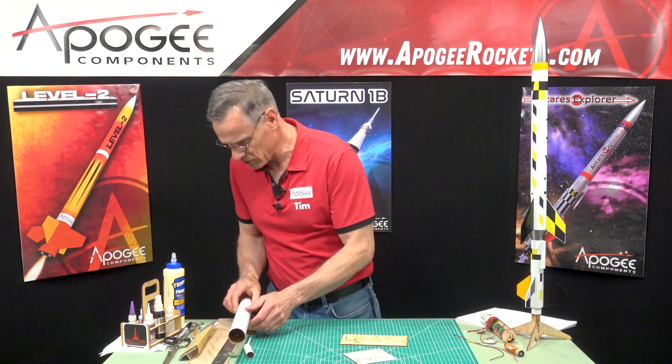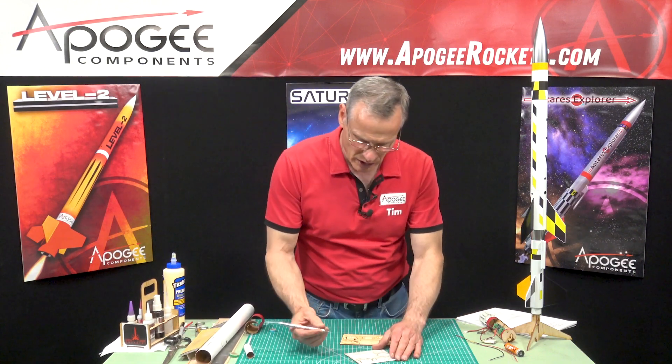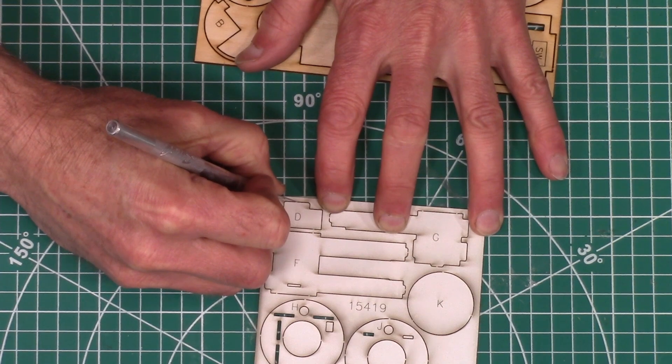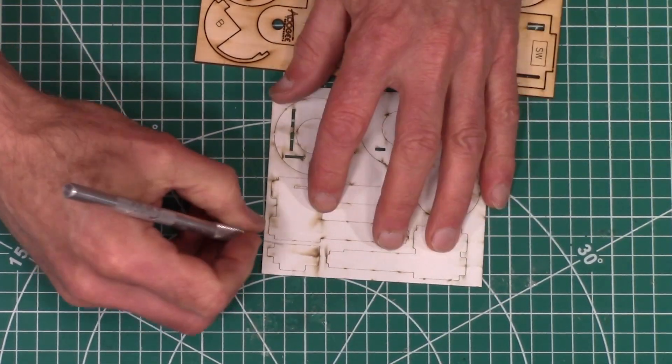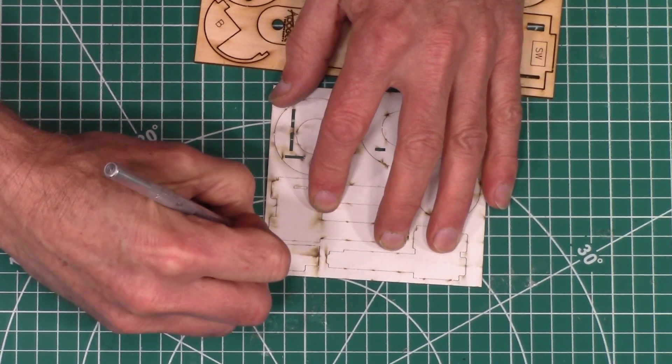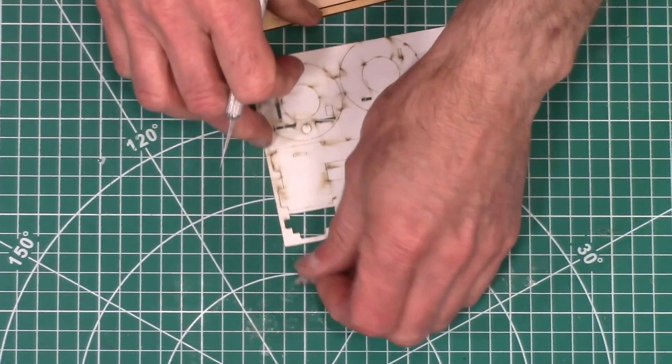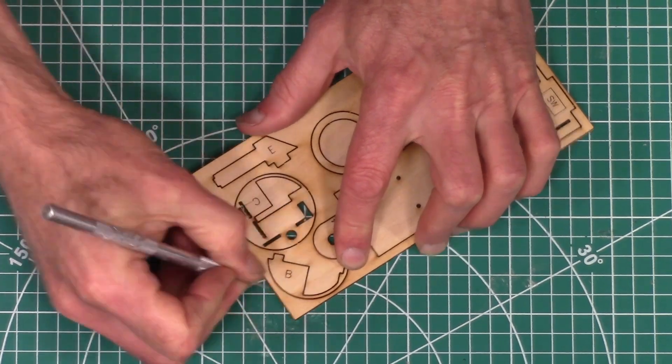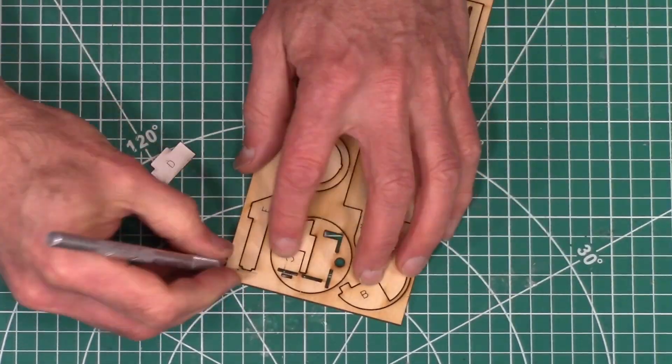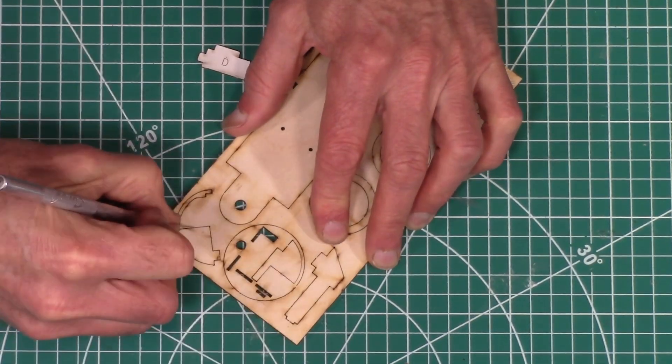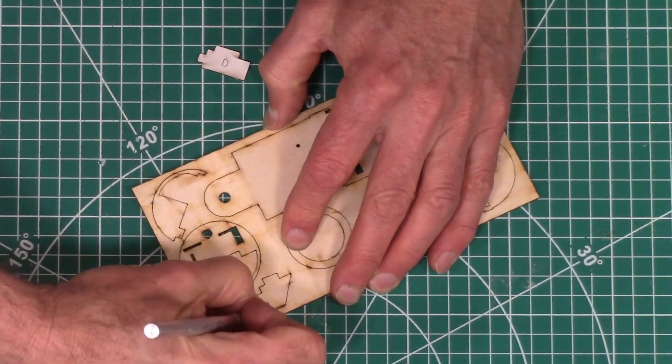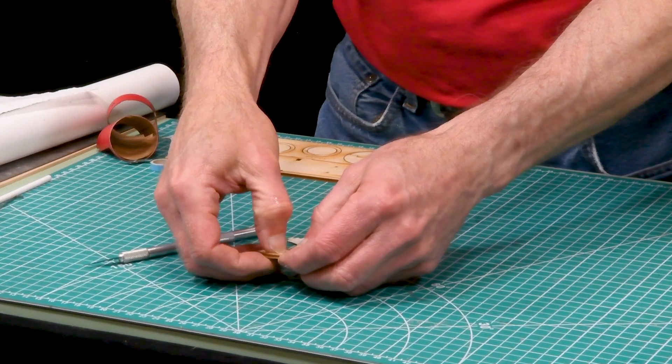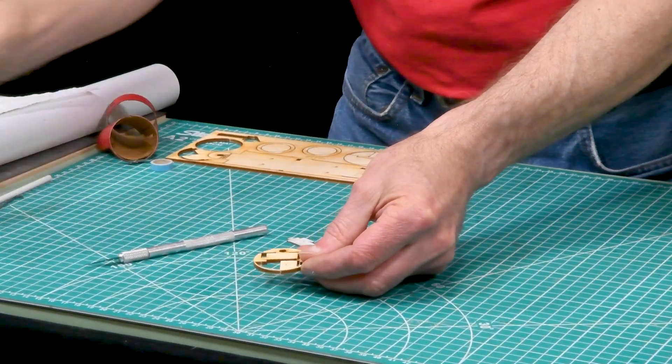So you're going to take your hobby knife, and I recommend cutting through the little tabs so that you can remove the parts easier without damaging them. And this little piece right here is also removed, and that is scrapped, so you can put that aside.